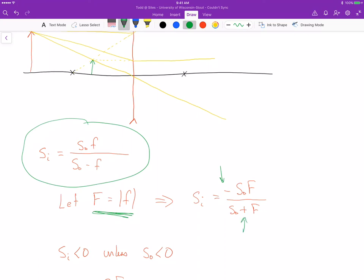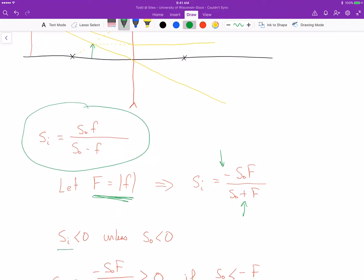So looking at this, I can see that the image distance SI is always less than or equal to zero unless SO is negative. That's the only possible way that I'm going to get a negative sign there, because that's the only option that I have.